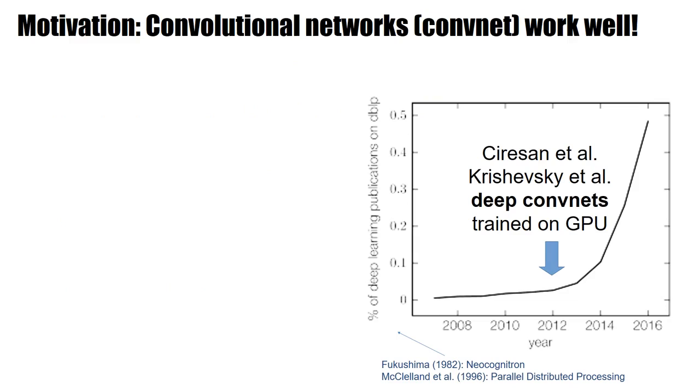Deep neural networks have been around for a very long time. Convolutional networks can be traced back to the neocognitron of Fukushima in 1982. So the elements of deep learning were around, were available. However, the revolution of big deep neural networks really started in around 2012, when deep convolutional networks were trained on GPUs.